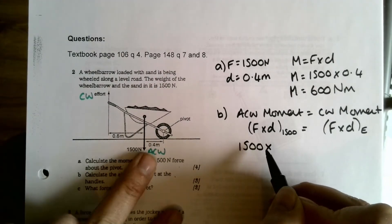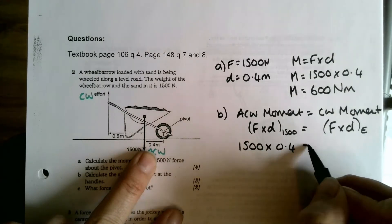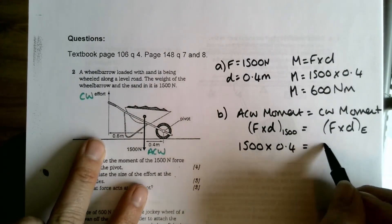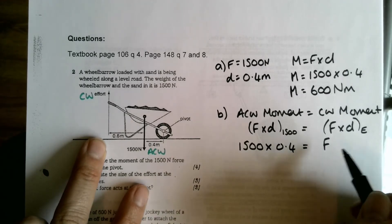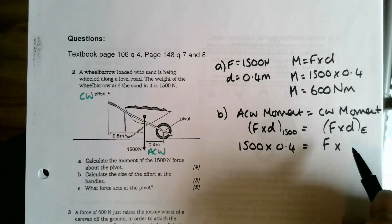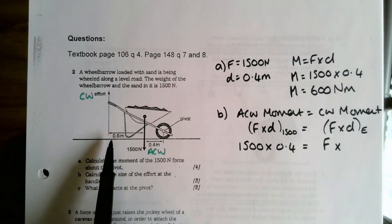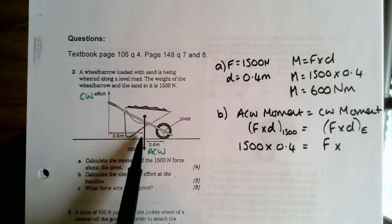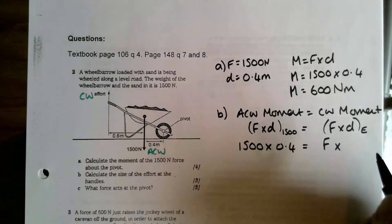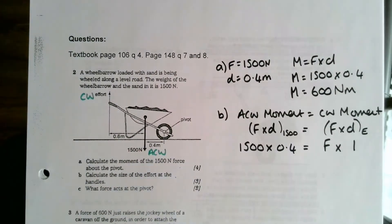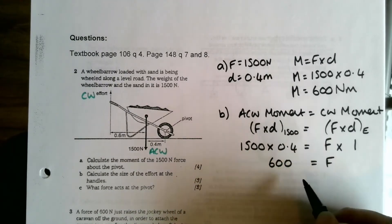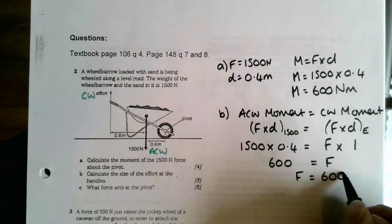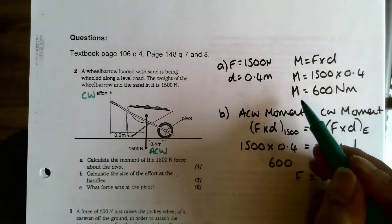And the distance from the pivot is 0.4. For my clockwise, which is the effort force, I'm just going to stick to calling that F. You could call it E if you want, but I'm just going to stick with F. And the distance it is from the pivot is 1 meter, because it's 0.6 from here to here and then 0.4 from here to here, so that's 1 meter altogether. So 1500 multiplied by 0.4 gives me 600 is equal to 1 times F, so that's F. So my effort force is just 600 newtons. So there's that answer.